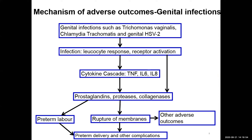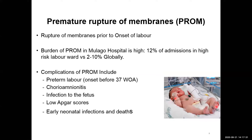The next slide explains how adverse outcomes occur with genital infections. If we have infections like herpes or other genital infections, you get a leukocyte response and receptor activation, releasing cytokines such as tumor necrosis factor, interleukin-6, and interleukin-8. These release prostaglandins — which cause preterm labor — and also proteases and collagenases which dissolve membranes and lead to rupture. This cascade leads to preterm delivery. Apart from preterm labor, you can get infections in mother and baby; babies may score poorly, need NICU admission, or even die.